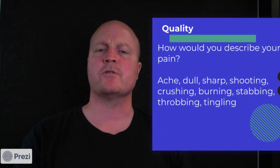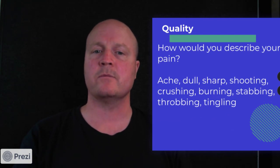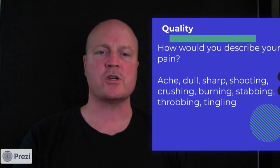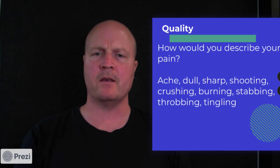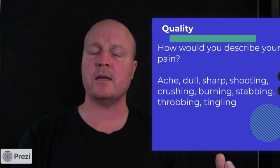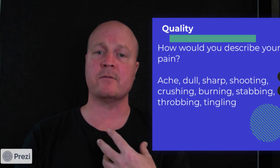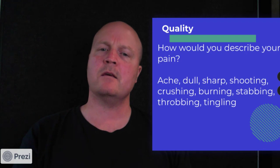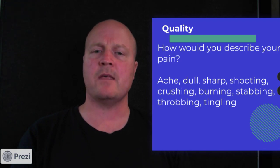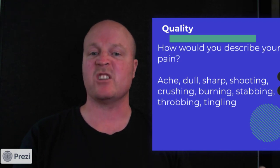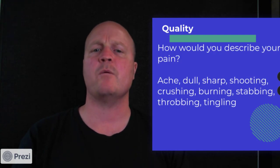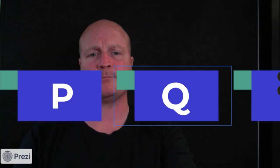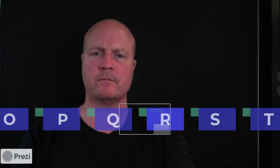With Q we've got quality — how would you describe your pain? This is going to help with our diagnosis. An ache, dull, sharp, shooting, crushing, burning, stabbing, throbbing, or tingling pain. If you think of a crushing chest pain, you're probably thinking a myocardial infarction. If it's more of a dull ache, that may be more musculoskeletal. A sharp shooting pain may be nerve related.